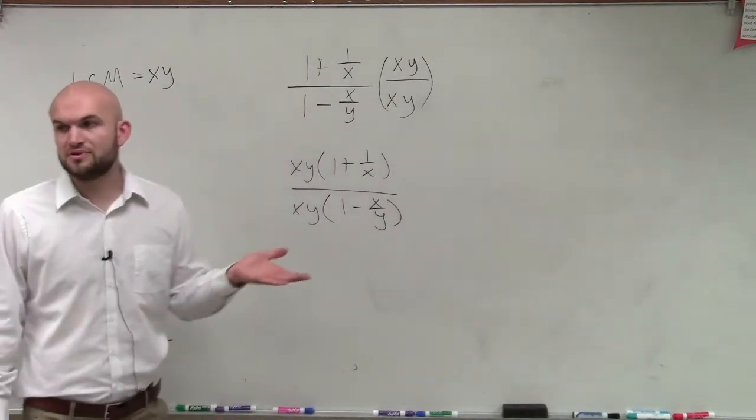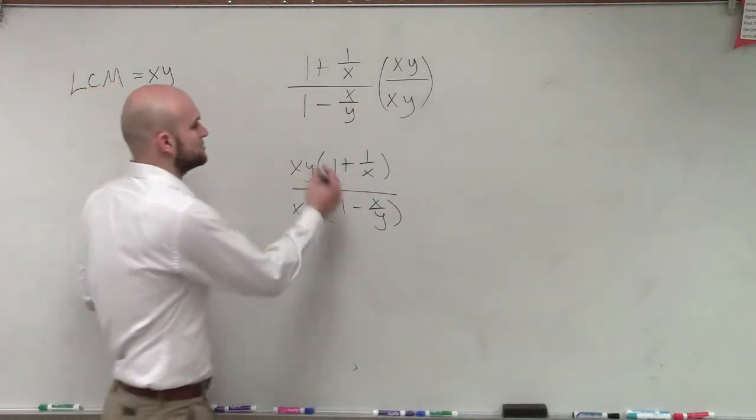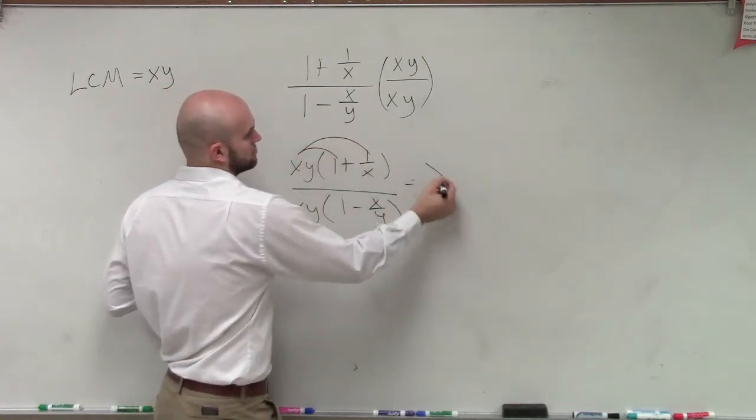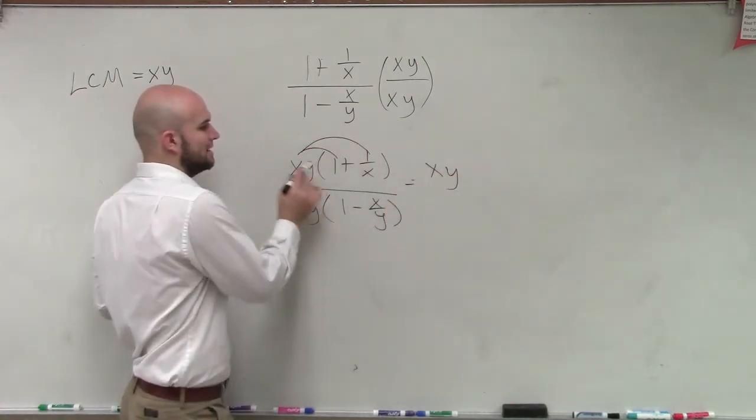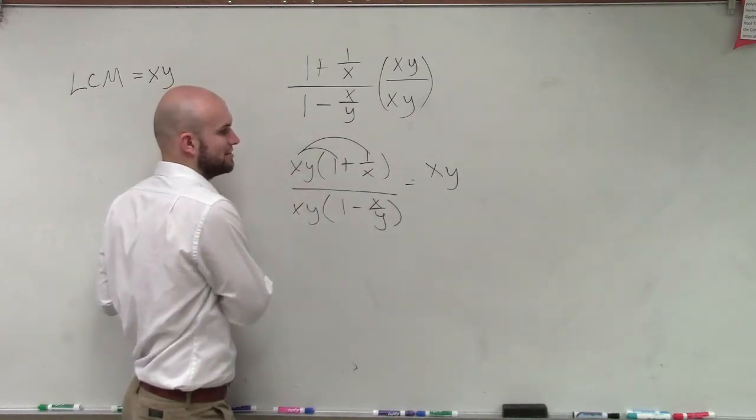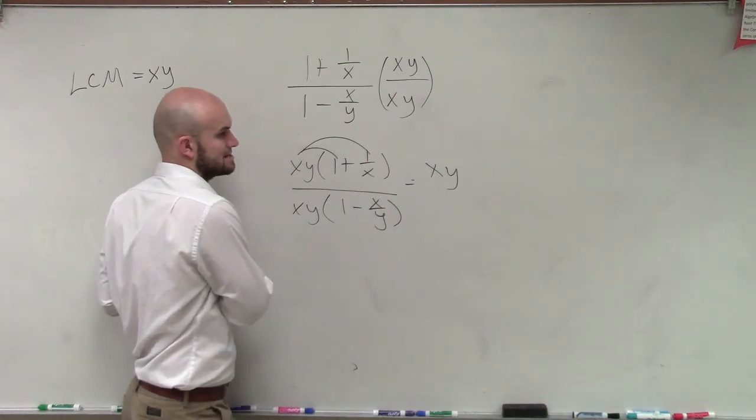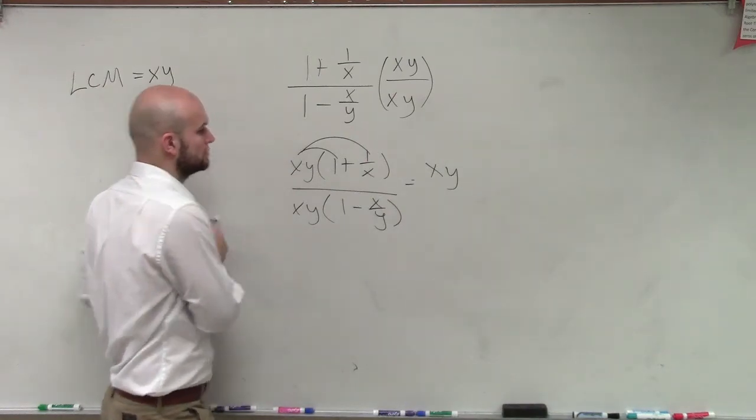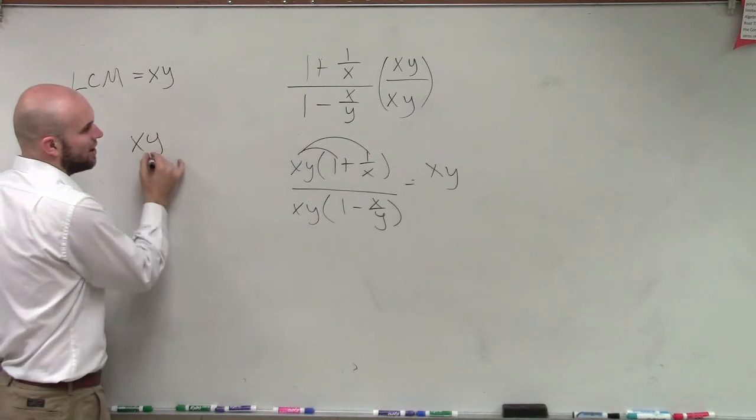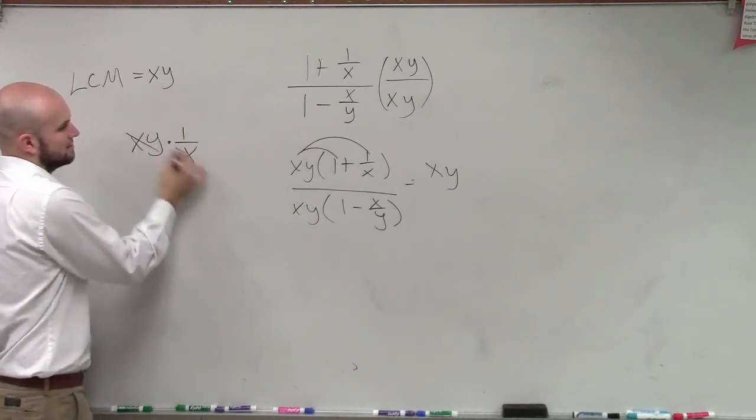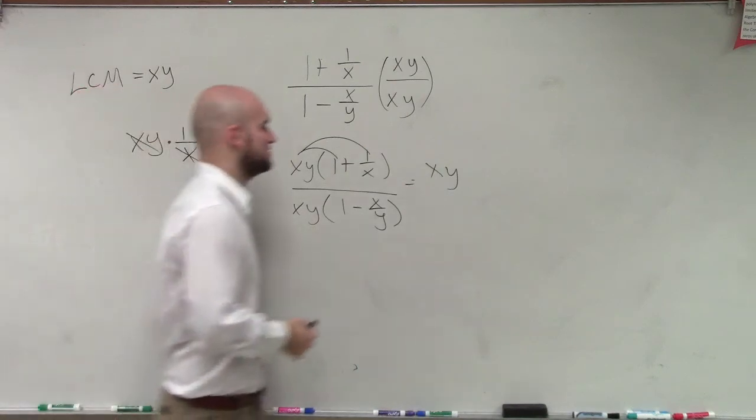Now, what happens when we do this? It means you will reapply a distributive property. X times y is xy. X times y times 1 over x is just going to leave you with y over x. X times y times 1 over x, those divide up to 1, just leave you with y.